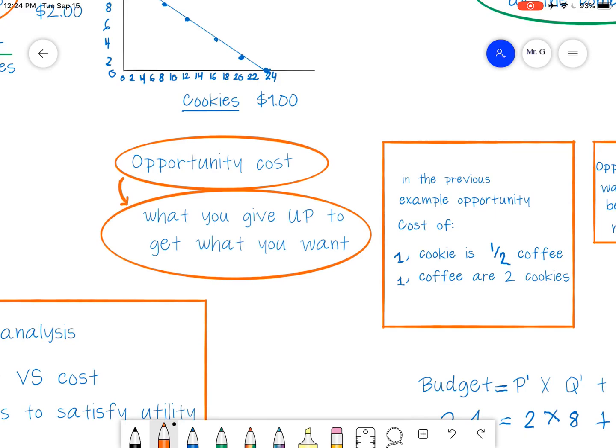But opportunity cost, if you understand it, it actually becomes really important. And a lot of students, when they think about it, because often we make choices and we don't think twice about it, but what opportunity cost is saying is that for every choice you make due to scarcity, remember, that's what economics is. The decisions we make due to scarcity in the world, whatever you choose, what you give up to get what you want.